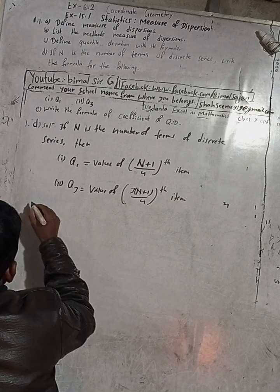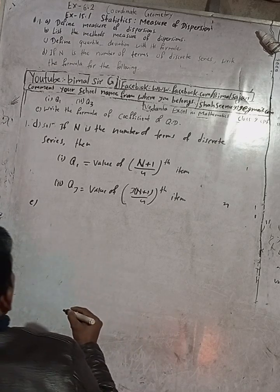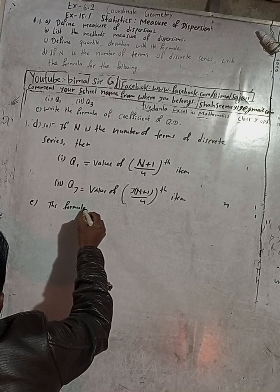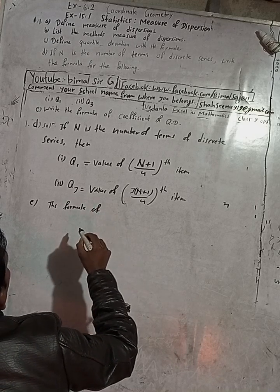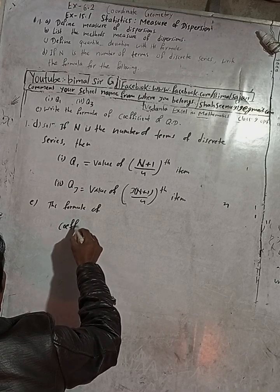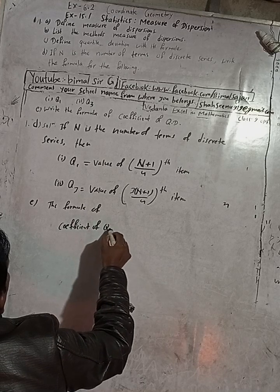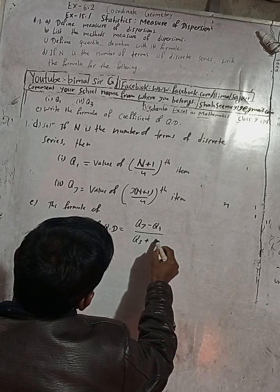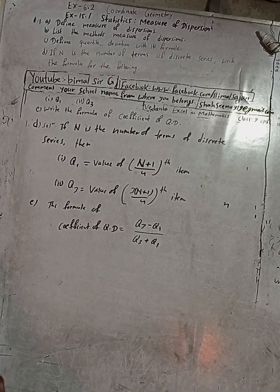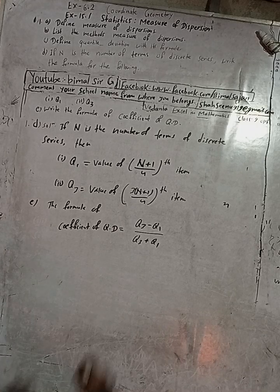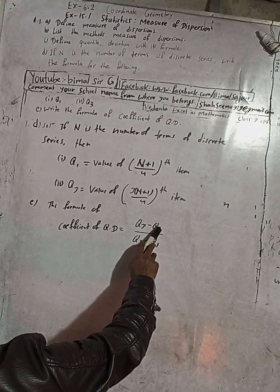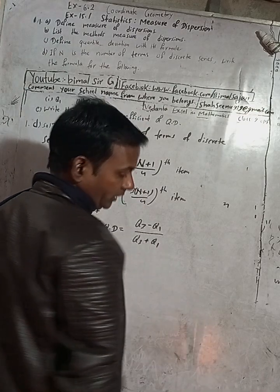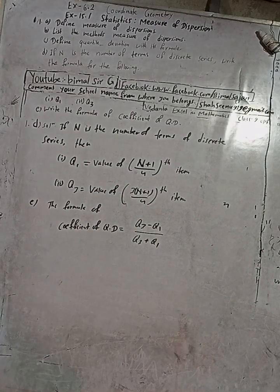Now part E: write the formula for the coefficient of quartile deviation. The formula for coefficient of QD is: Coefficient of QD = (Q3 − Q1) / (Q3 + Q1). That is, the difference of the upper quartile and lower quartile divided by the addition of the upper quartile and lower quartile.